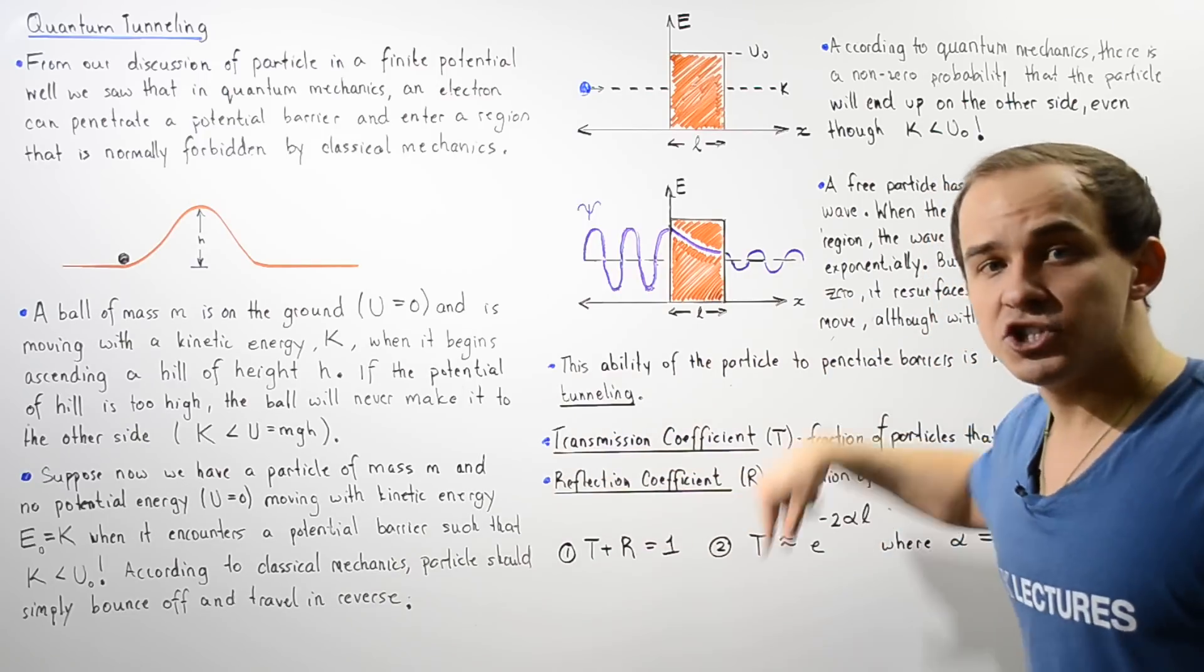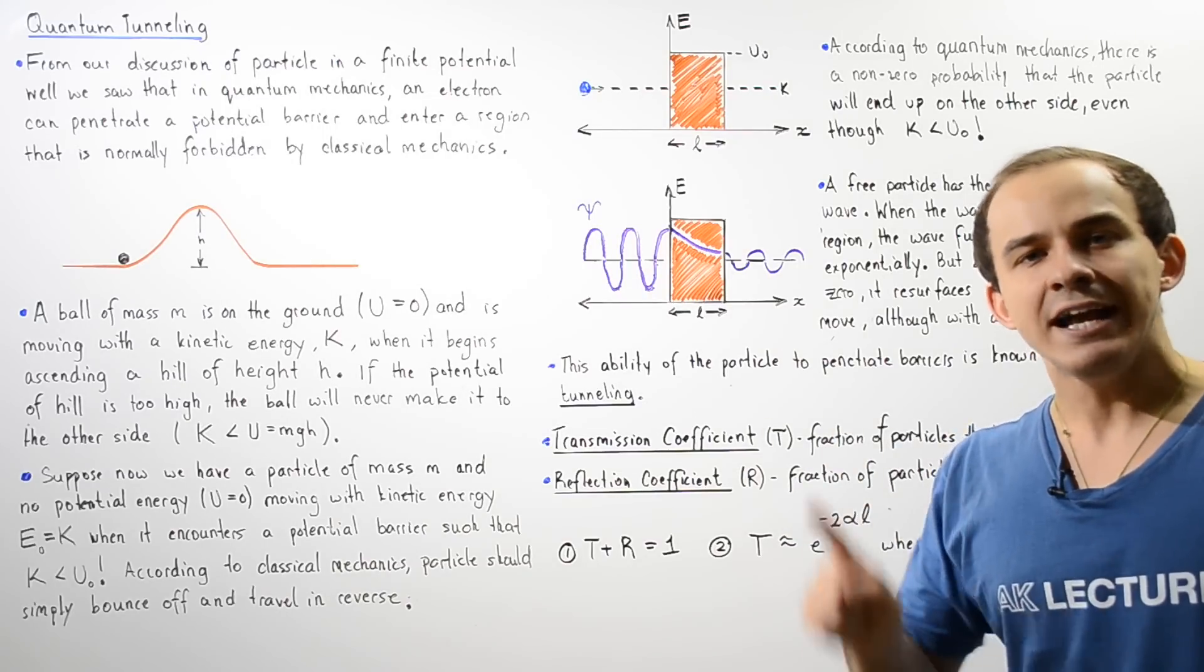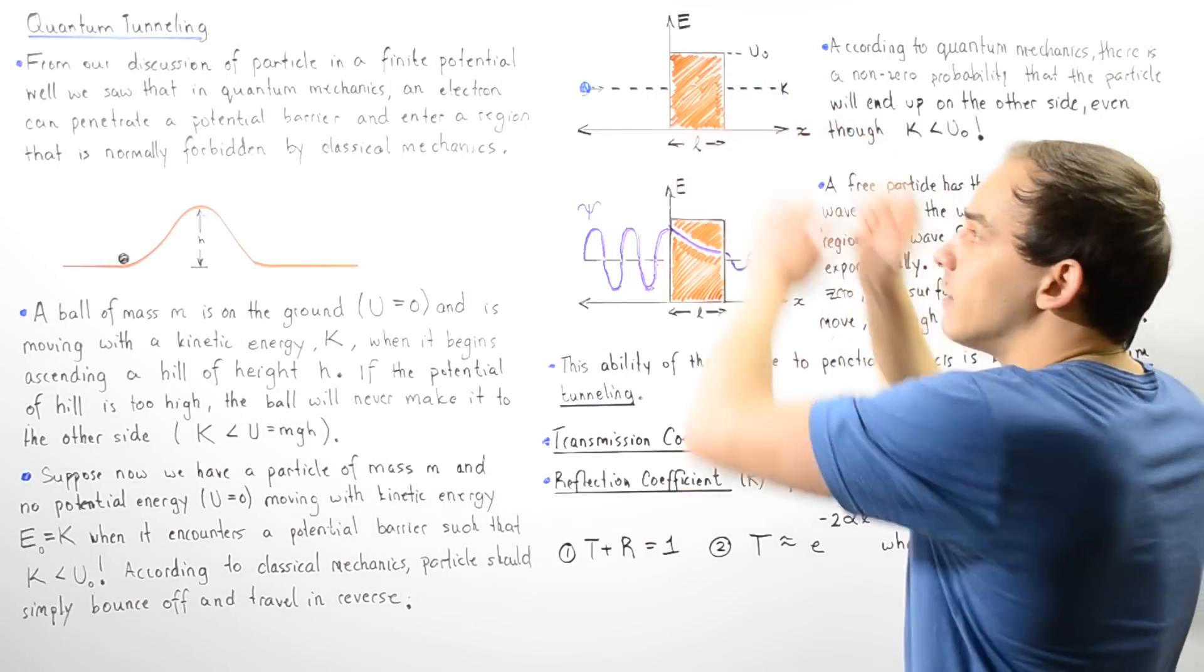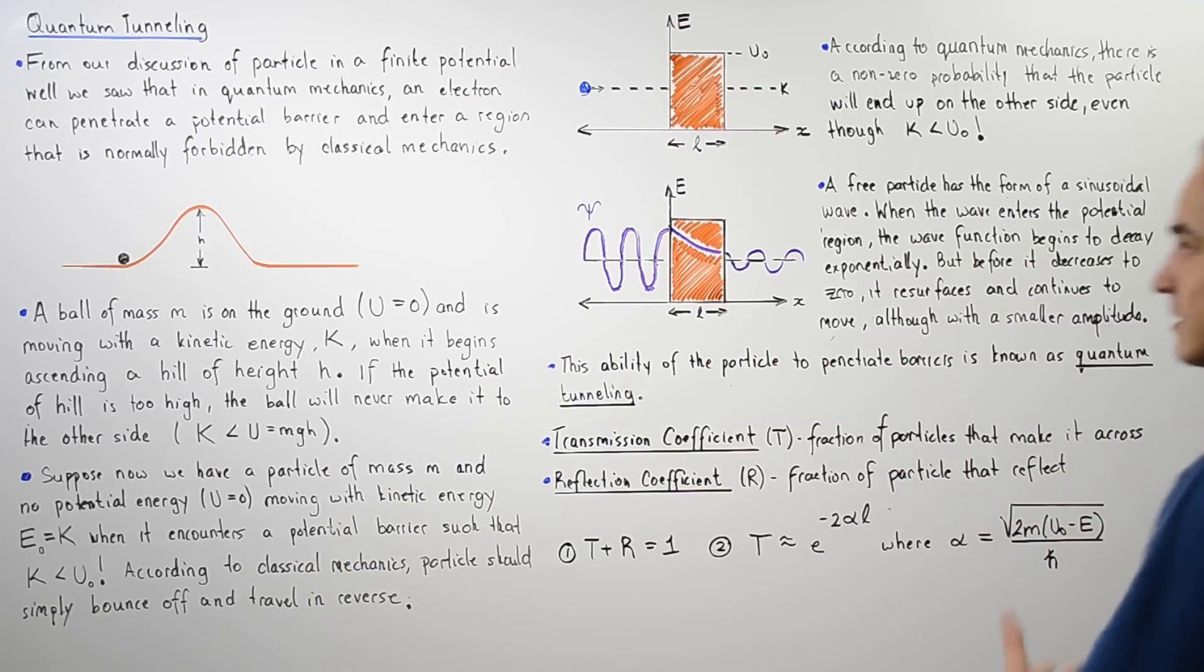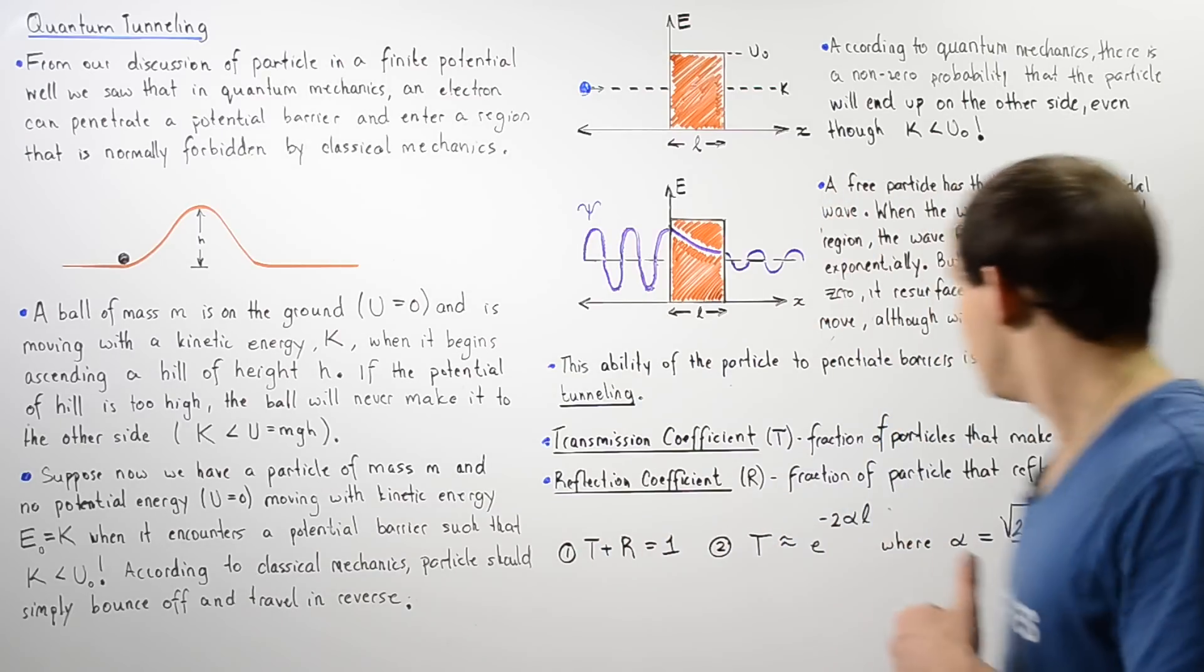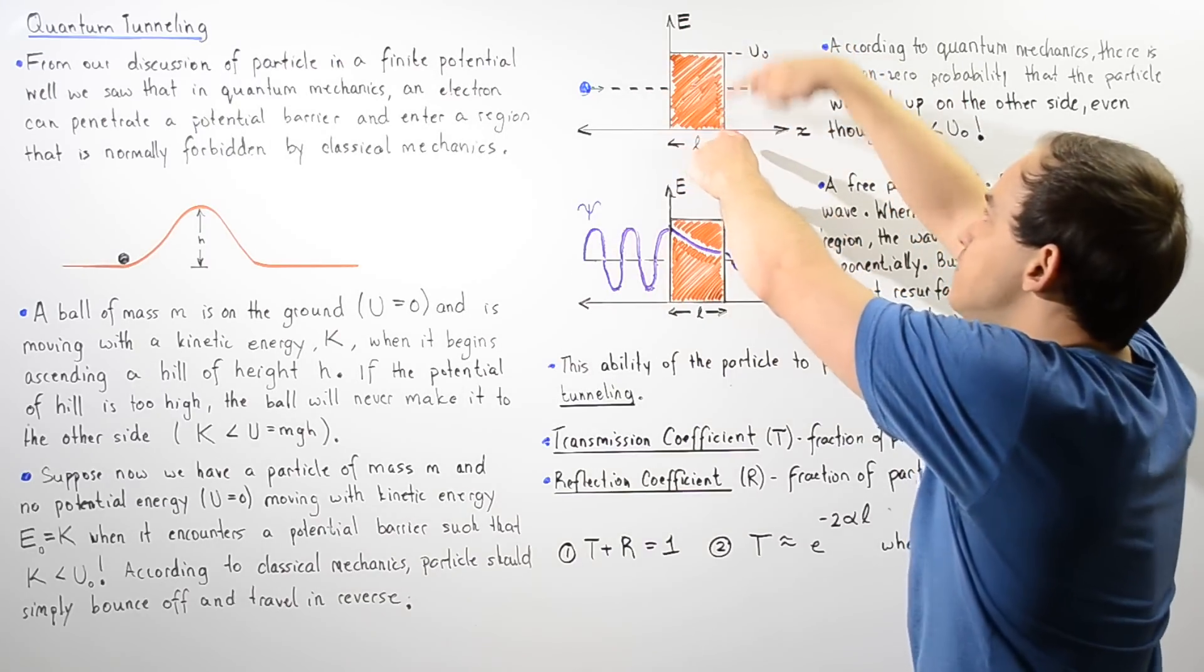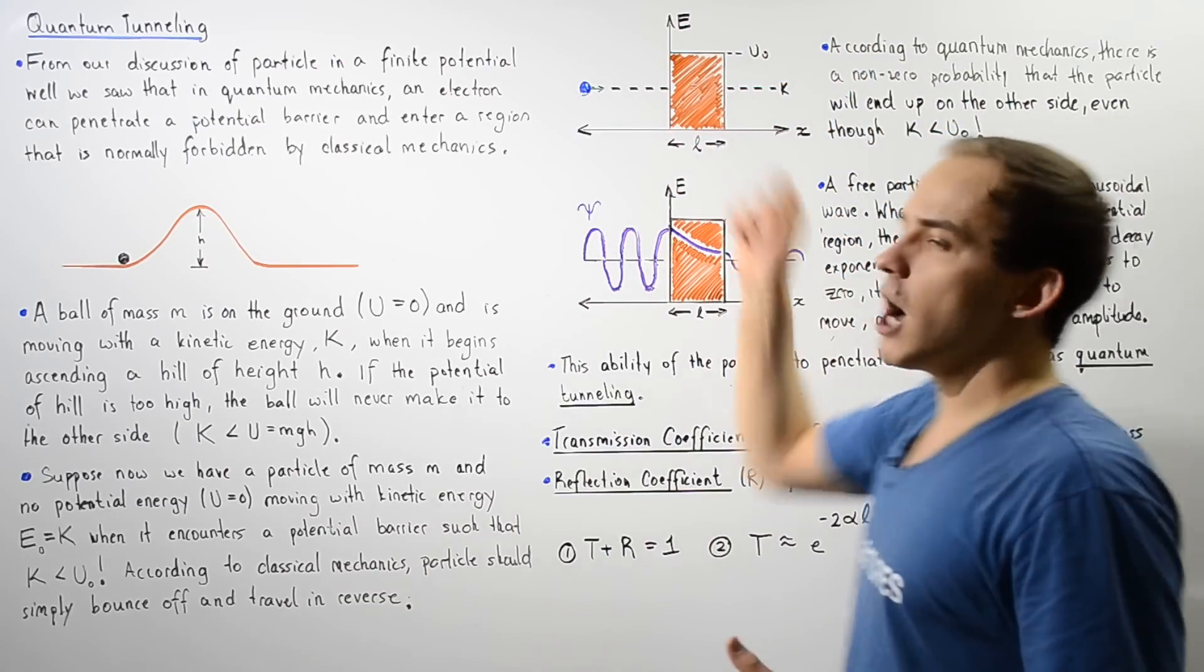Now T, the transmission coefficient, is approximately equal to e to the power of negative 2 multiplied by α multiplied by L, where L is the width of our potential barrier, and α is equal to the square root of 2 multiplied by M multiplied by U₀ minus E divided by ℏ. Where ℏ is our constant, Planck's constant divided by 2π, M is the mass of that particle, U₀ is the height of this barrier in terms of its potential energy, and E is the total energy of that particle.